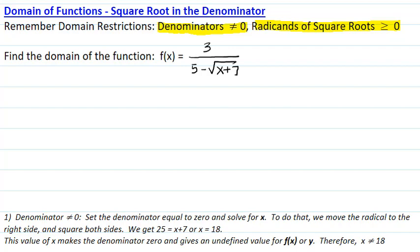First, for the denominator to not equal zero, we set the denominator equal to zero and solve for x. We do that by moving the radical to the right, so we have 5 equals the square root of x plus 7, and squaring both sides.